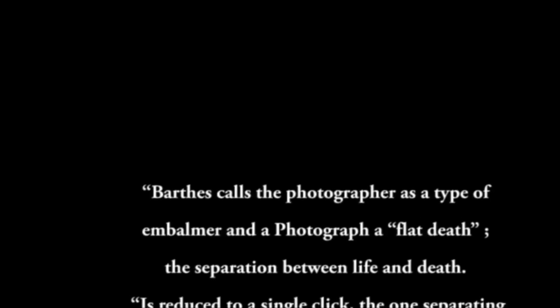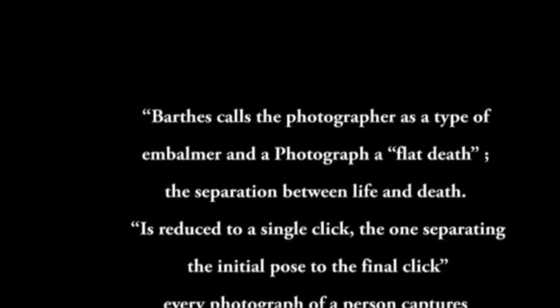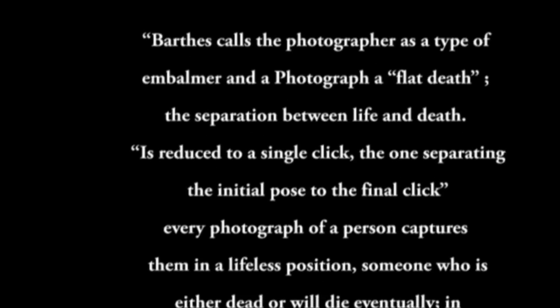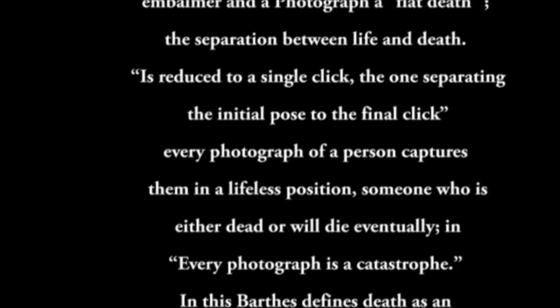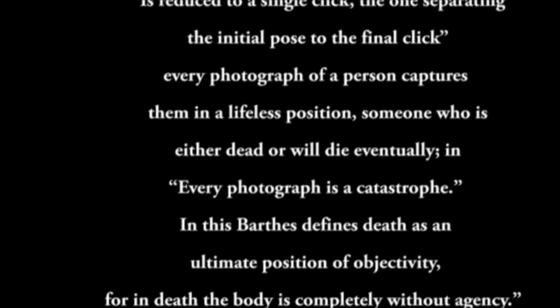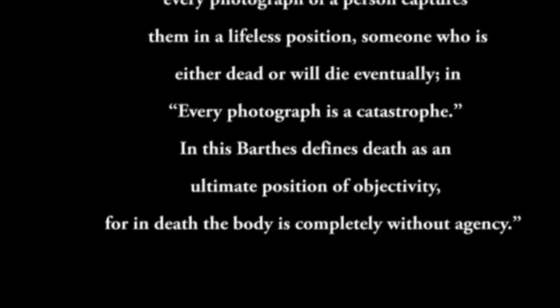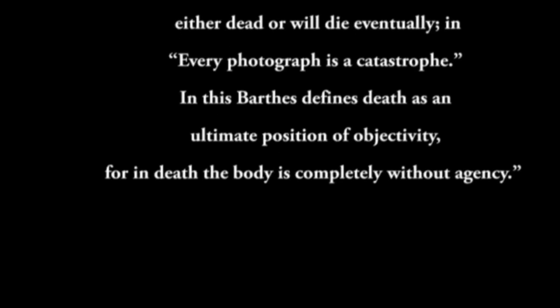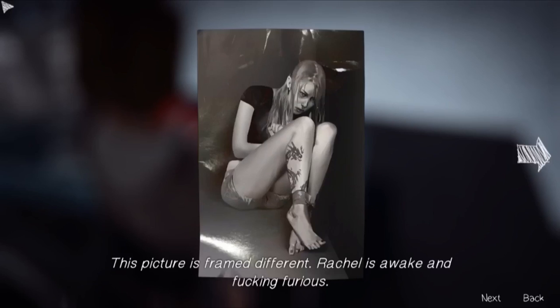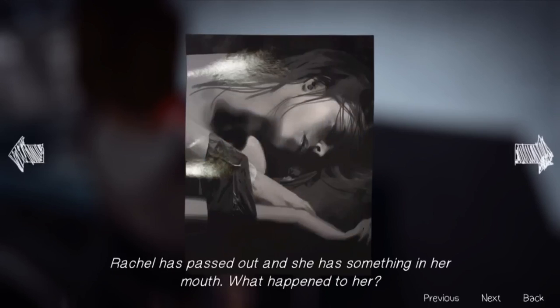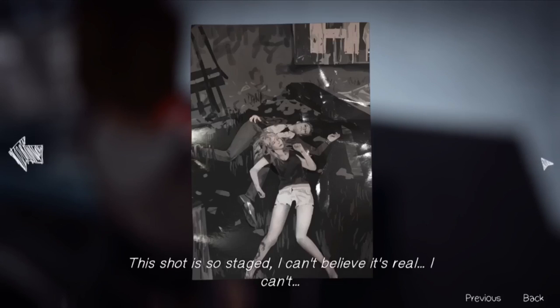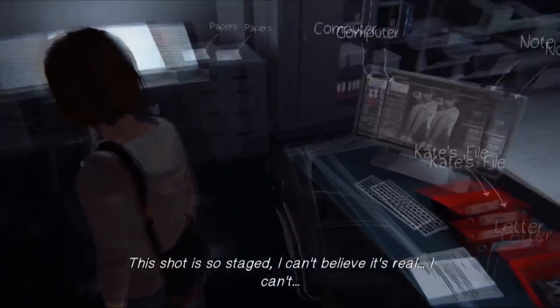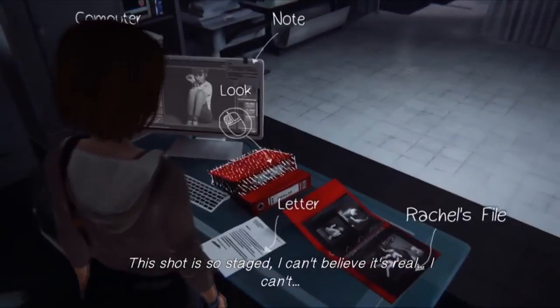Roberta Treitz cites: 'Barthes calls the photographer a type of embalmer, and a photograph a flat death — the separation between life and death is reduced to a single click, the one separating the initial pose to the final click. Every photograph of a person captures them in a lifeless position, someone who is either dead or will die eventually. In every photograph is a catastrophe.' In this, Barthes defines death as an ultimate position of objectivity, for in death the body is completely without agency. Bringing this back to Rachel Amber — in death we only see her in photographs, and with Rachel being dead, it successfully embalms her into the person the citizens of Arcadia Bay knew her as, removing any real agency she had in life.